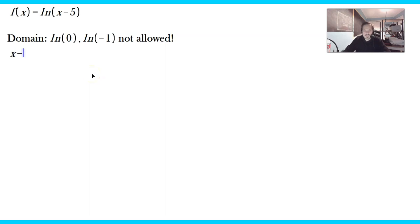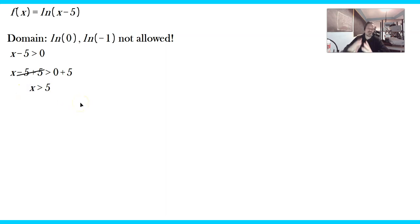So you have to make sure that x minus 5, the value of the expression x minus 5, is always greater than 0. You've got to say x minus 5 is greater than 0. Then you just add 5 to both sides: x minus 5 plus 5 is greater than 0 plus 5, which means x is greater than 5. This is the domain in inequality form.